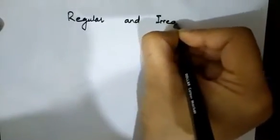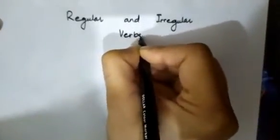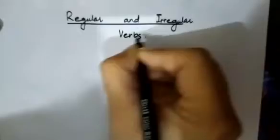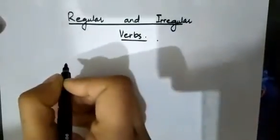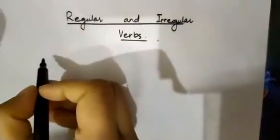So girls, let me tell you about regular and irregular verbs. As we have done forms of verbs today, you have observed that some verbs end with d and ed.